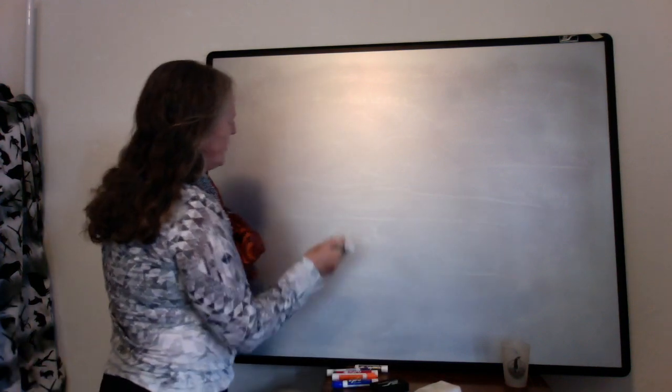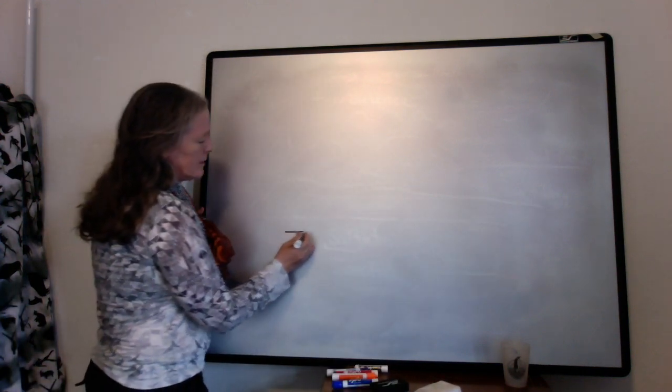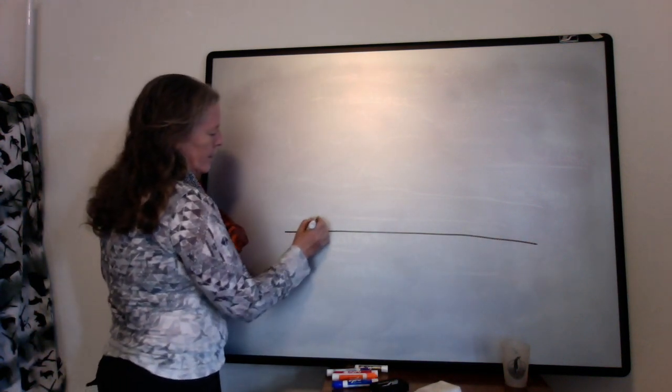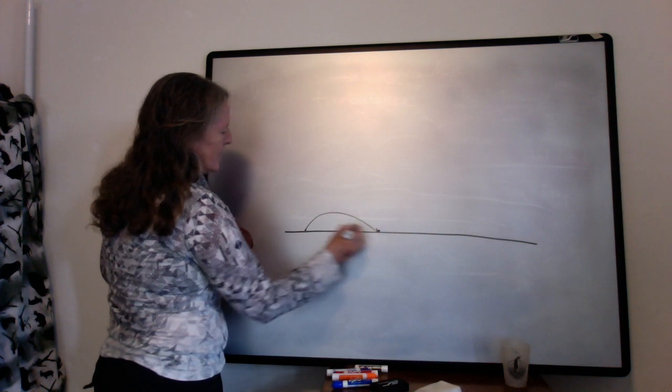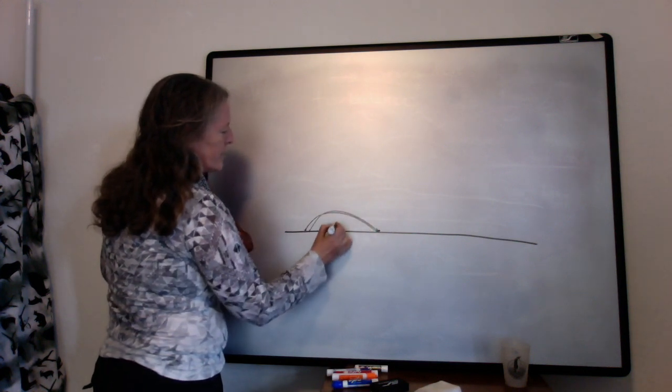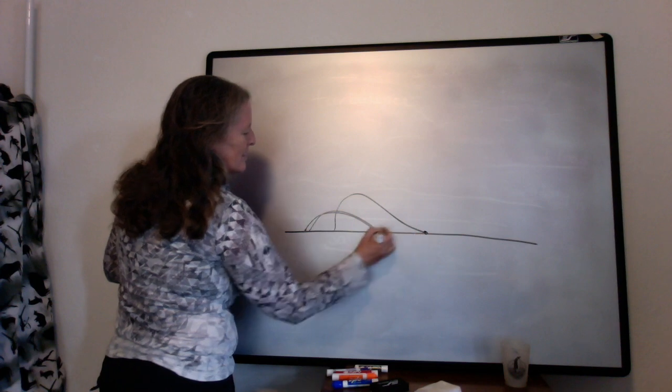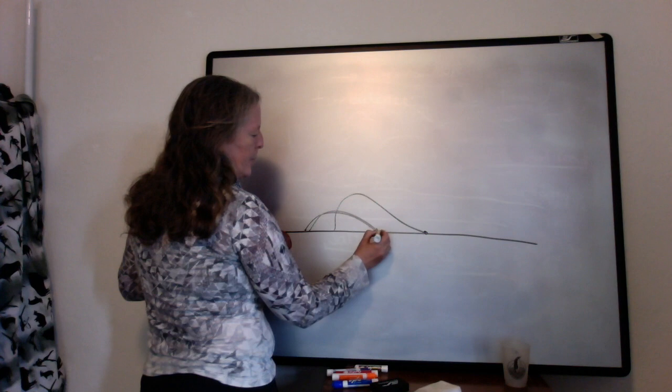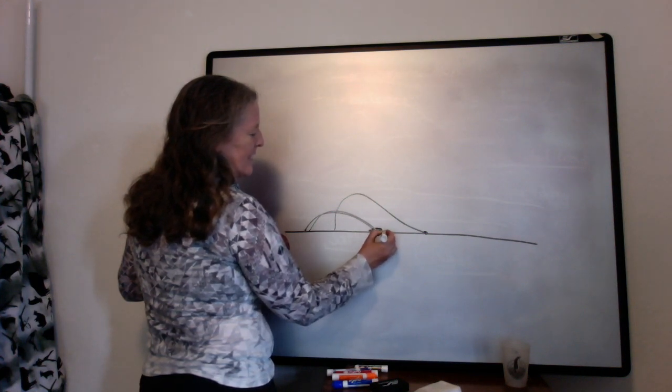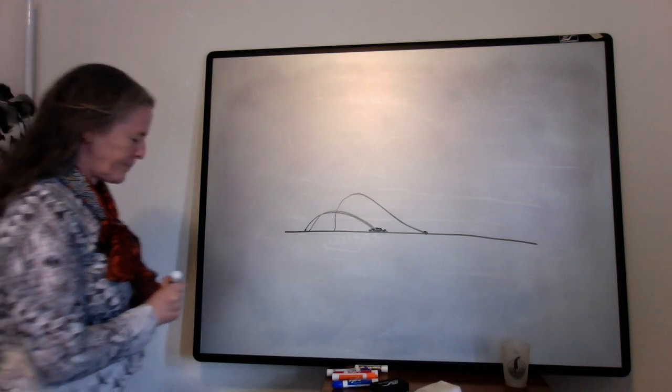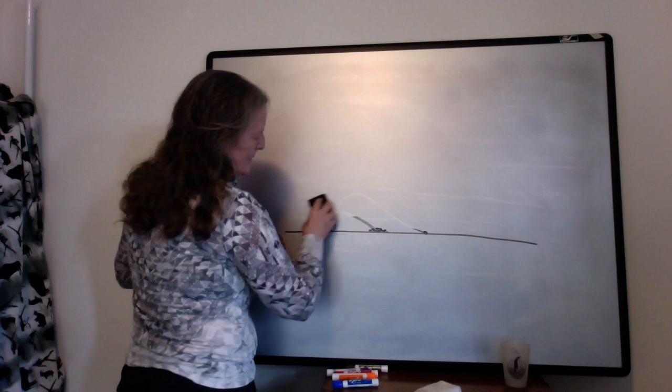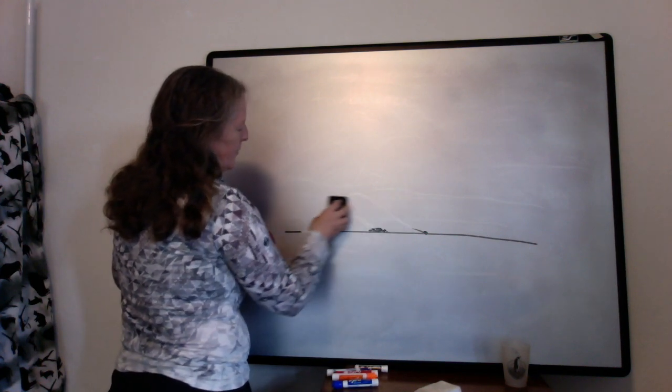So what often happens, I'm just going to draw the grains as dots now, right? So we have grains saltating, and they saltate different distances. And what often happens is you can end up with a little bit of a pile of grains in one place here. And when you end up with a pile of grains, it starts to deflect the flow.